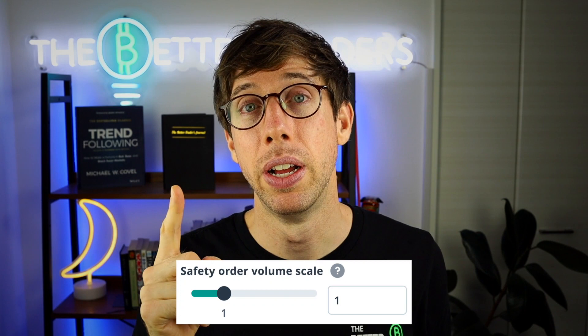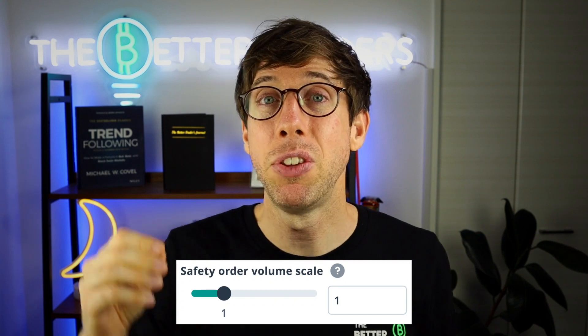Let's talk first about volume because it's a little bit easier to understand. The default setting for the volume scale is set to one, which means that if you have the safety order amount set to two and you have five of those safety trades, then it's going to be two, two, two, two, two — it's going to be equal.